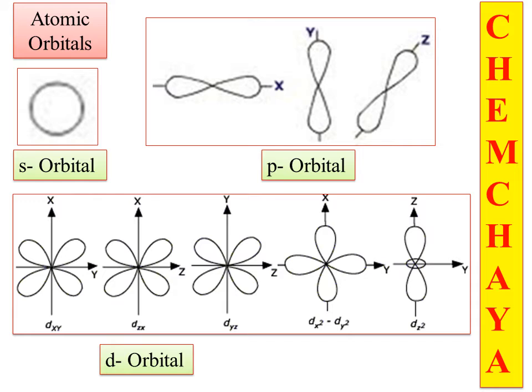Atomic orbitals of the atom: s-orbitals are spherical in shape, p-orbitals are dumbbell shaped, and d-orbitals are double-dumbbell shaped. Atomic orbitals, before forming the molecular orbital, undergo a process called hybridization.